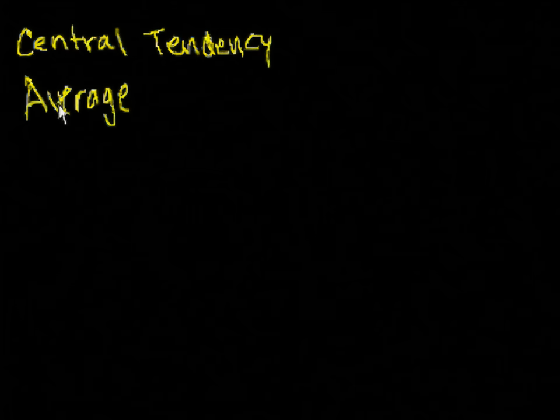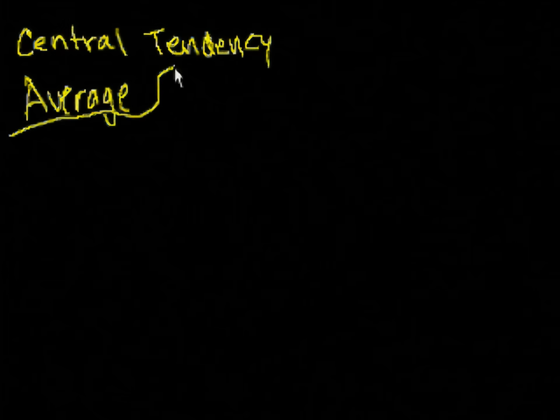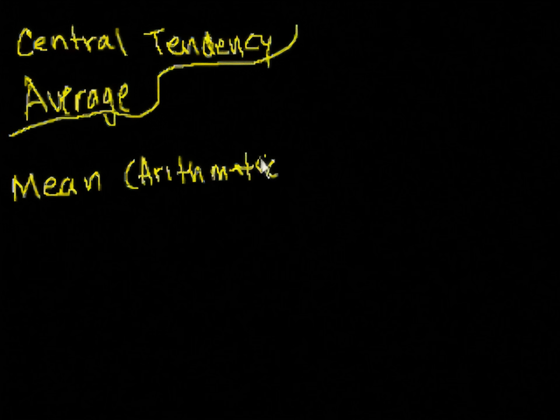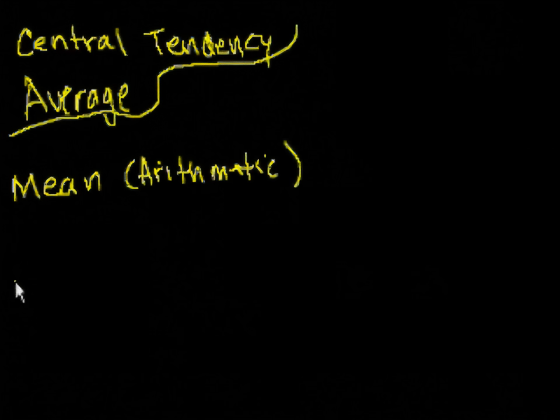So there's a bunch of ways that you can actually measure the central tendency or the average of a set of numbers. And you've probably seen these before. They are the mean. Actually, there's types of means, but we'll stick with the arithmetic mean. Later when we talk about stock returns and things, we'll do geometric means and maybe we'll cover the harmonic mean one day.